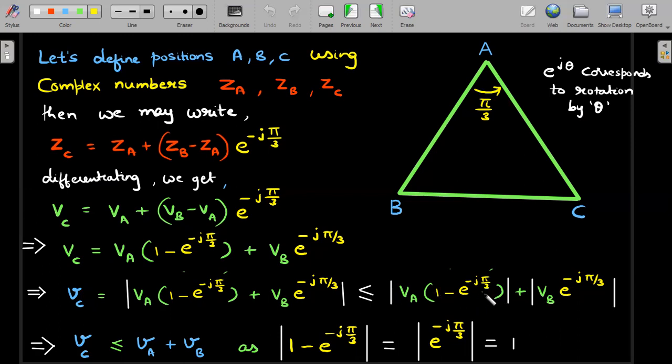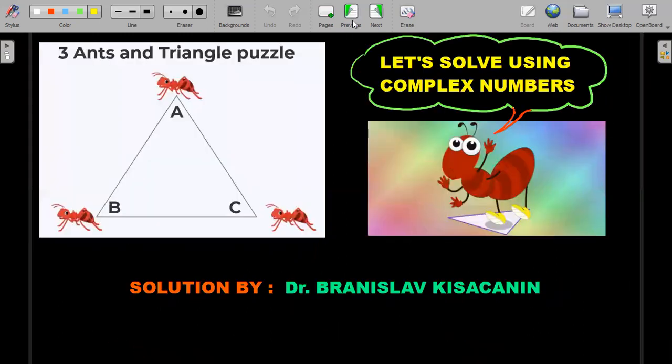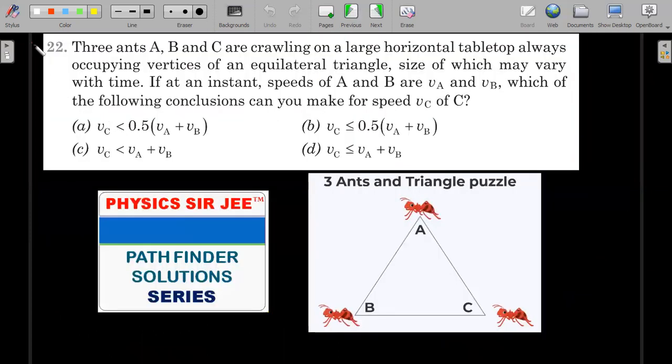This ensures that whatever complex numbers you have inside, these are actually unit numbers. Modulus of (1 - e^(-jπ/3)) is easy to see that it's equal to one, and modulus of this obviously is equal to one. So the sum of these two immediately becomes the sum of the speeds.